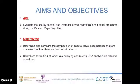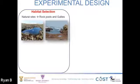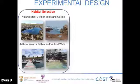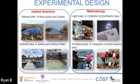The overall aim of this project is to evaluate the use by coastal and intertidal larvae of artificial and natural structures along the Eastern Cape coastline. The objectives are to determine and compare the composition of coastal larval assemblages associated with artificial and natural structures, and to contribute to the field of larval taxonomy by conducting DNA analysis on selected larvae. Fieldwork was conducted at a natural site and at an artificial site. Four replicated habitats were selected: rock pools and gullies at Kenton-on-Sea, and jetties and vertical walls at the Port Alfred Marina.